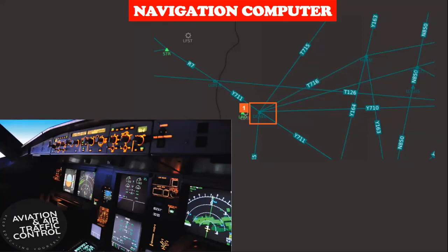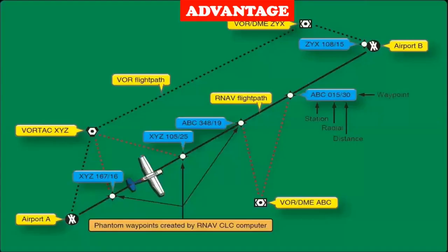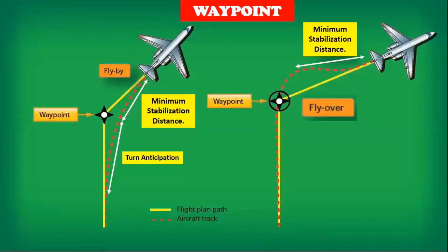The computer estimates the aircraft position using the fitted navigation sensors and compares the estimation to the defined route. Area navigation offers numerous advantages, including shorter flight routes, reduced fuel costs, and increased airspace efficiency. Airlines can save millions annually by flying more direct routes between any two waypoints with the help of area navigation.